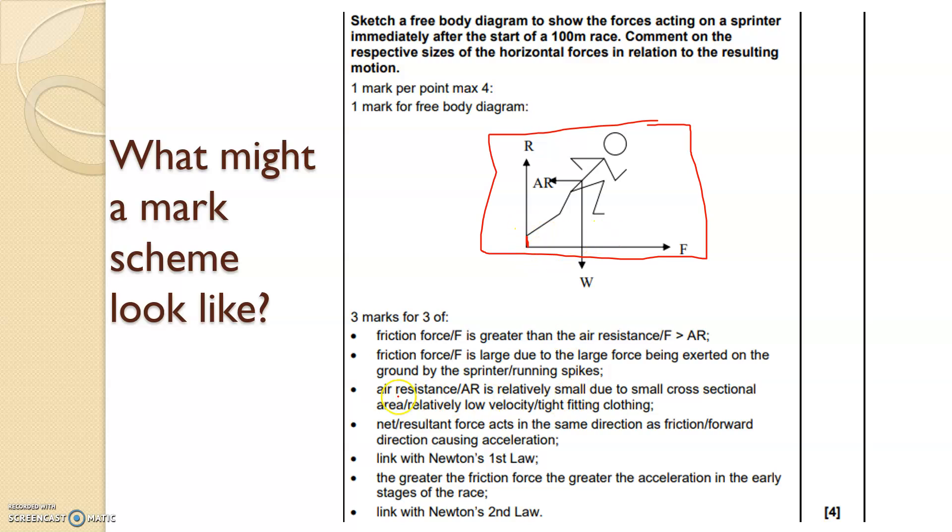In the explanation below, you could increase this friction by using running spikes. Air resistance is relatively small due to the cross sectional area, relatively low velocity. So because they're just starting out the race, air resistance will be relatively low. And you could say like Bolt or Yohan Blake, they wear the tight fitting clothing in order to reduce the air resistance or drag. The resultant force acts in the same direction as friction causing acceleration.